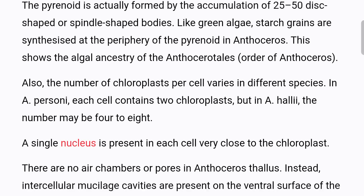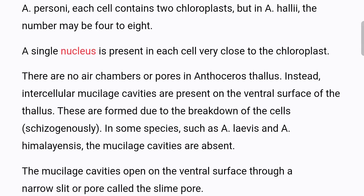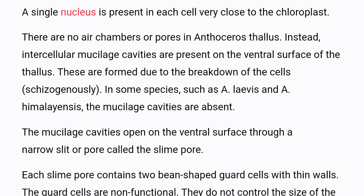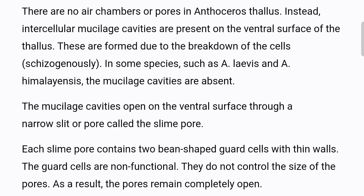The number of chloroplasts per cell varies in different species. In Anthoceros personae, each cell contains two chloroplasts, but in Anthoceros haliae, the number may be 4-8. A single nucleus is present in each cell very close to the chloroplast. There are no air chambers or pores in the Anthoceros thallus; instead, intercellular mucilage cavities are present on the ventral surface, formed due to the breakdown of cells schizogenously. In some species such as Anthoceros lavis and Anthoceros himalayensis, the mucilage cavities are absent.